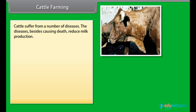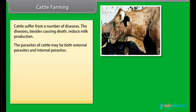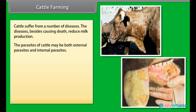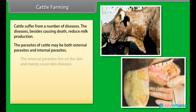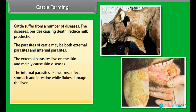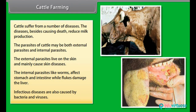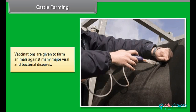Cattle suffer from a number of diseases which, besides causing death, reduce milk production. The parasites of cattle may be both external and internal. External parasites live on the skin and mainly cause skin diseases. Internal parasites like worms affect the stomach and intestine, while flukes damage the liver. Infectious diseases are also caused by bacteria and viruses. Vaccinations are given to farm animals against many major viral and bacterial diseases.